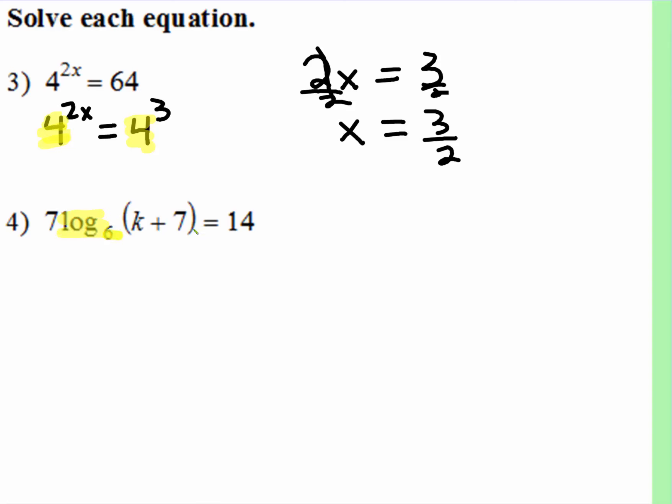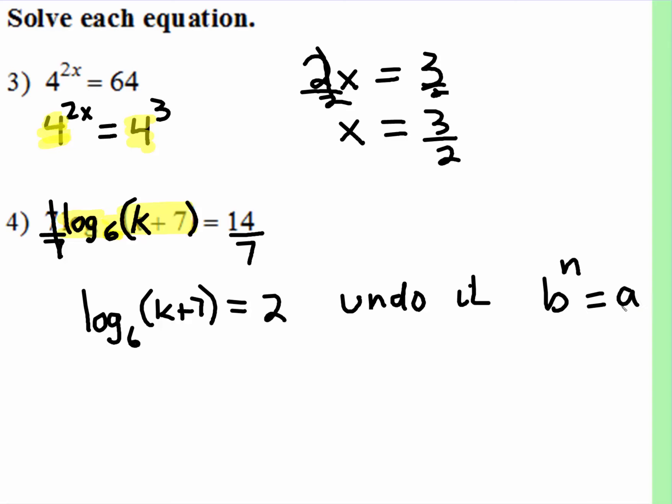We have log of base 6 of this thing being multiplied by this 7 right here. Well, before, and the variable, that k number is right there. Well, we want to figure out what k is equal to. But k is attached, is part of this log of base 6. So we want to get all of this by itself. We've got this 7 attached by multiplication. So we're going to do the inverse operation. So that leaves us with log base 6, this k plus 7 is equal to 2. Now we've got this logarithmic equation. We need to undo it. Well, what's the undoing of a logarithm? It's the exponential form.